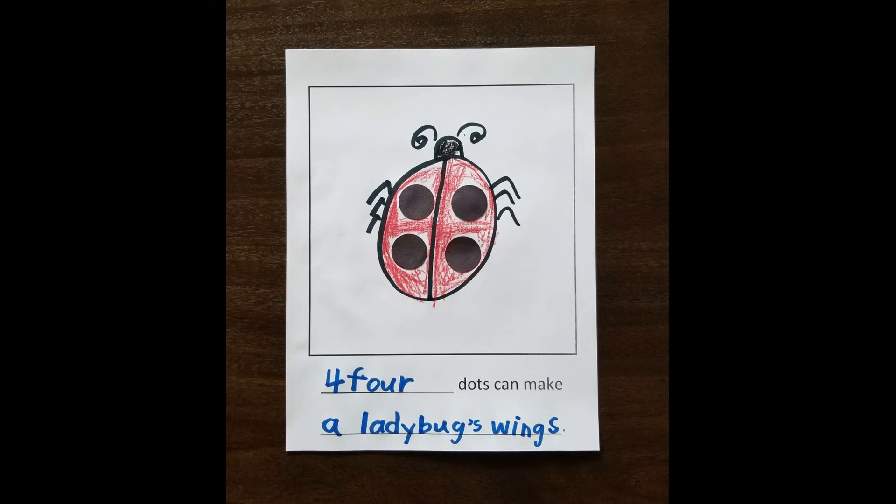Kids can make several pages and make a book. By counting black dots on each page, kids can practice counting.